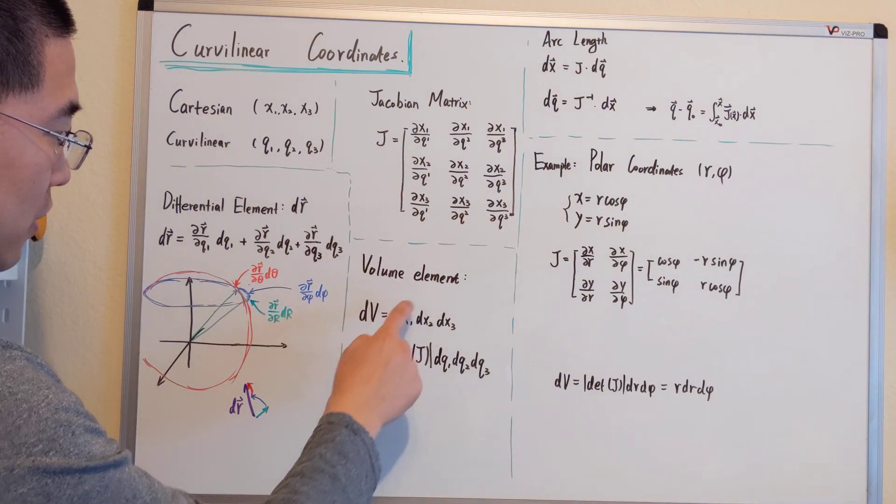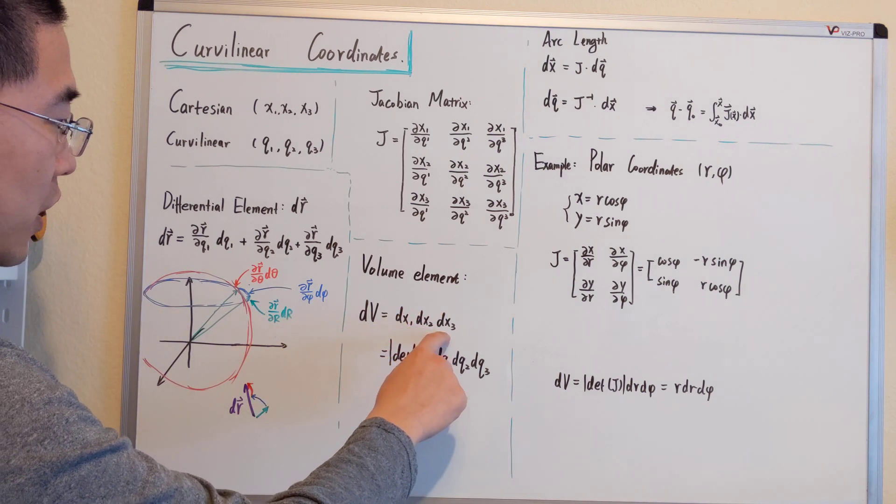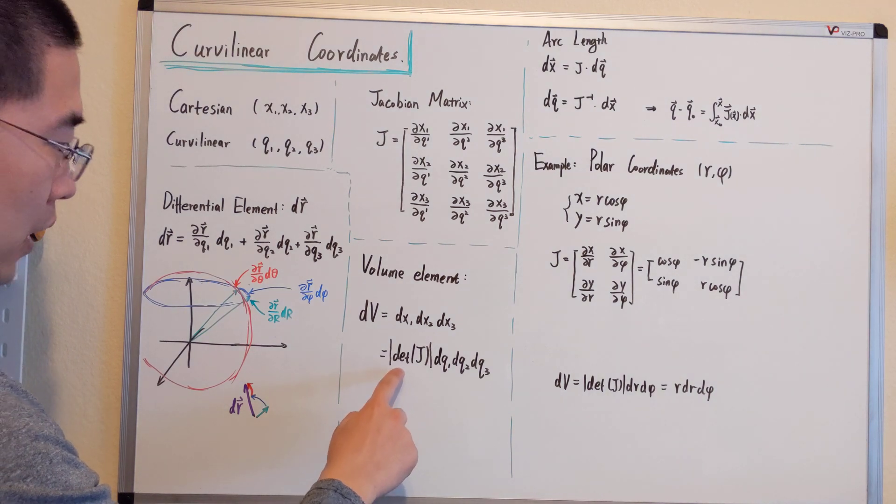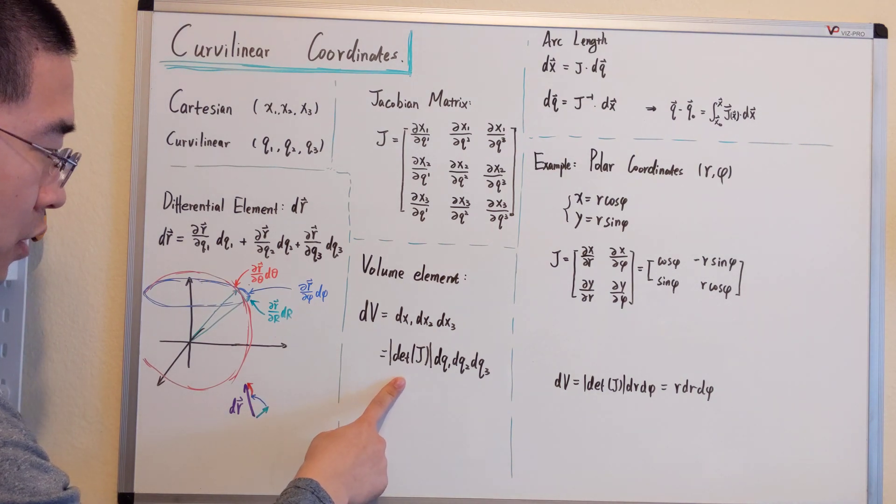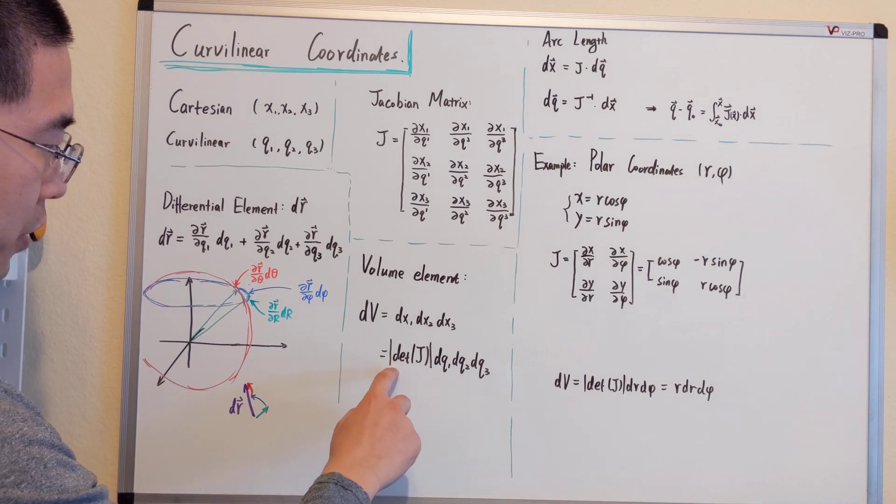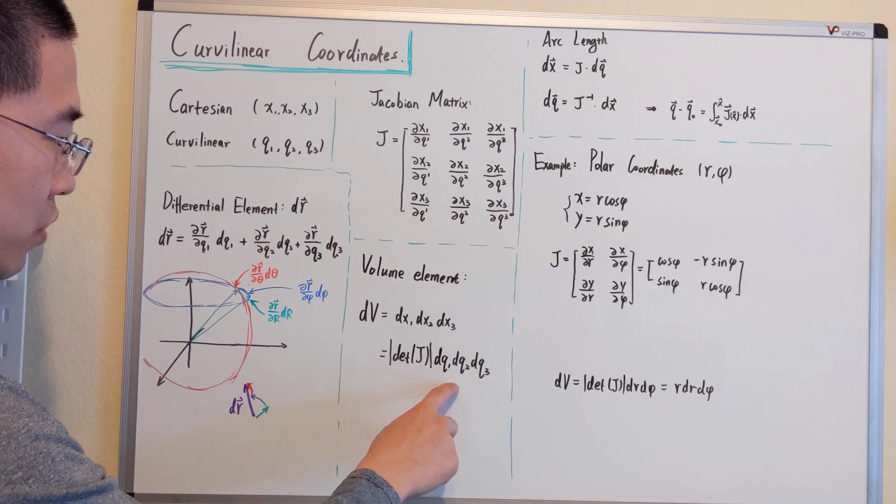The volume element will become, for Cartesian, dx1 dx2 dx3. For curvilinear, you'll need the absolute value of the determinant of J. So it will be the absolute value of the determinant of J times dq1 dq2 dq3.